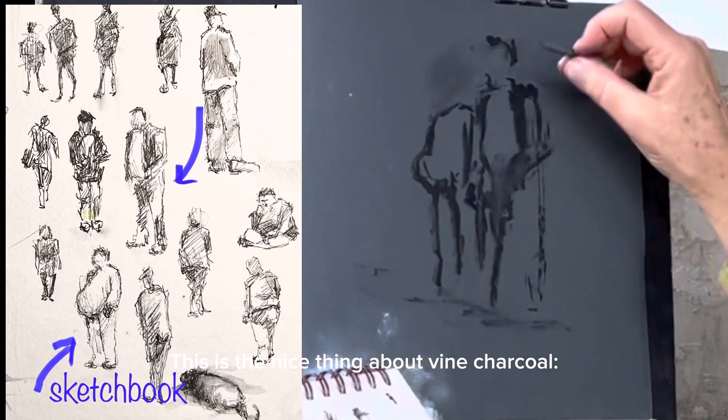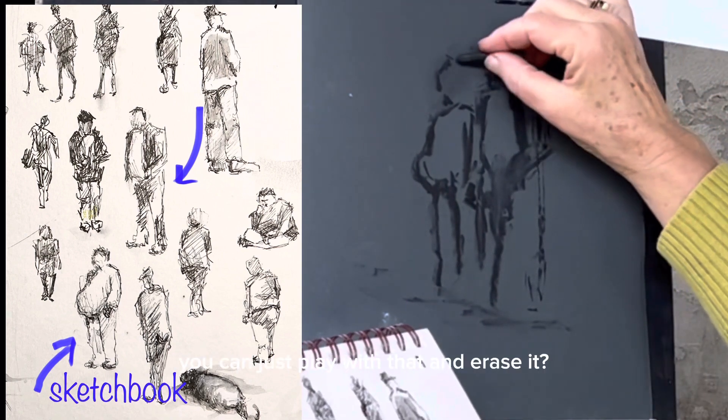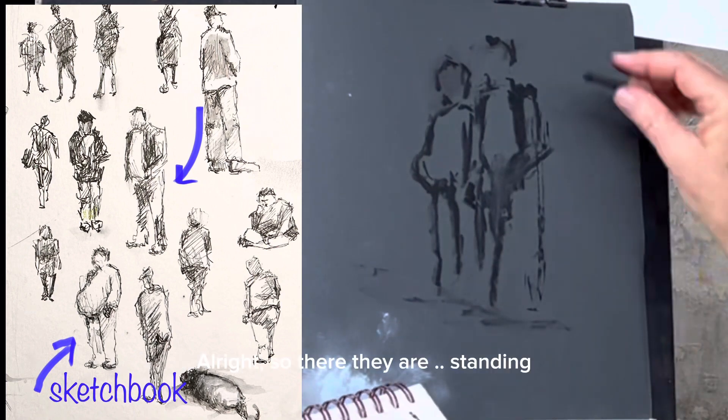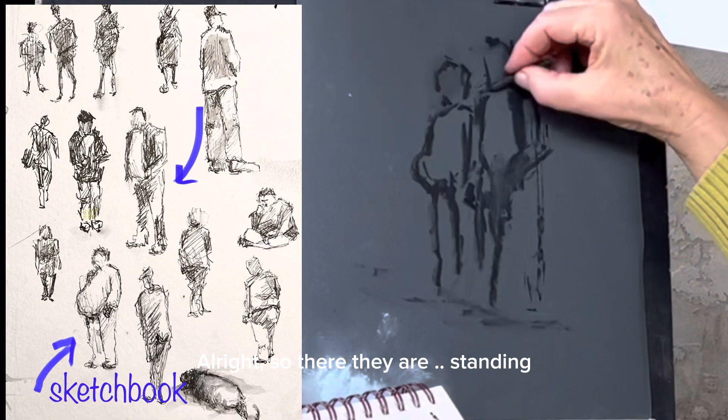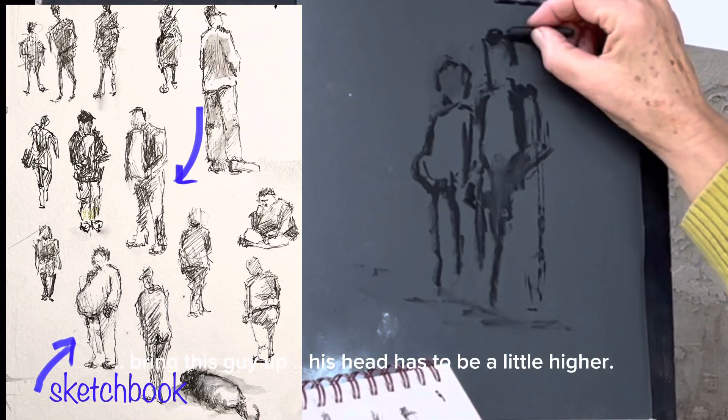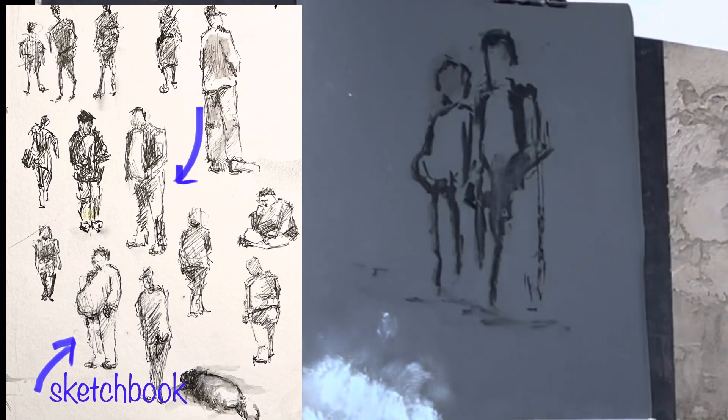And let's see, I want his head to sit back farther. This is the nice thing about vine charcoal. See how quickly and easily you can just play with that and erase it? I just use my fingers. All right, so there they are, standing. I'll bring this guy up, his head has to be a little higher. I don't want him to look like he has horns. Okay, so they're standing.